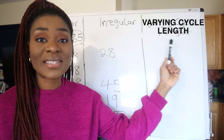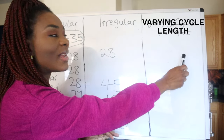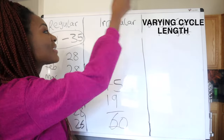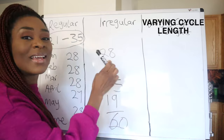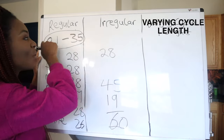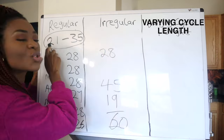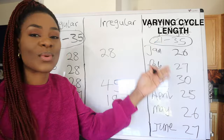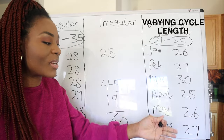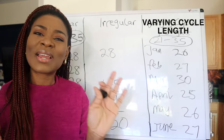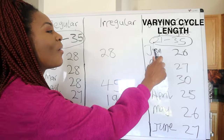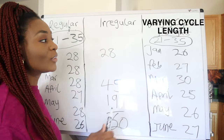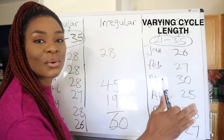Now let's talk about varying cycle length, which is different from an irregular cycle. You can have a varying cycle length and still have a regular cycle. The main question is: does your cycle fall within 21 to 35 days? Look at these numbers — 26, 27, 30, 25, 26, 27. The numbers are not the same, but they are all within the normal range.